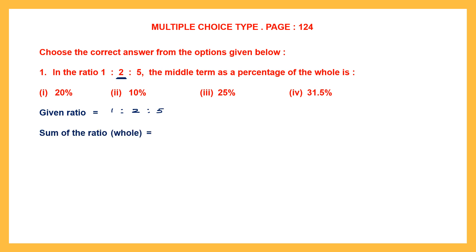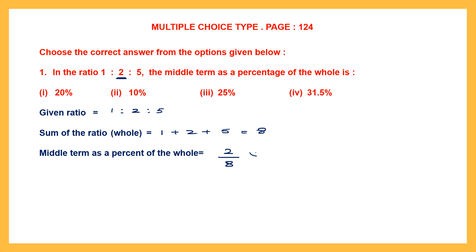Now the whole will be the sum of the ratio, that means we add 1 plus 2 plus 5, which equals 8. Now the middle term as a percent of the whole: the middle term is 2, so that is 2 by 8. To find the percentage we multiply by 100%. We cancel: 2 fours are 8, 4 into 25 is 100. So 1 into 25 is 25. The middle term as a percent of the whole is 25%, and that is option 3.